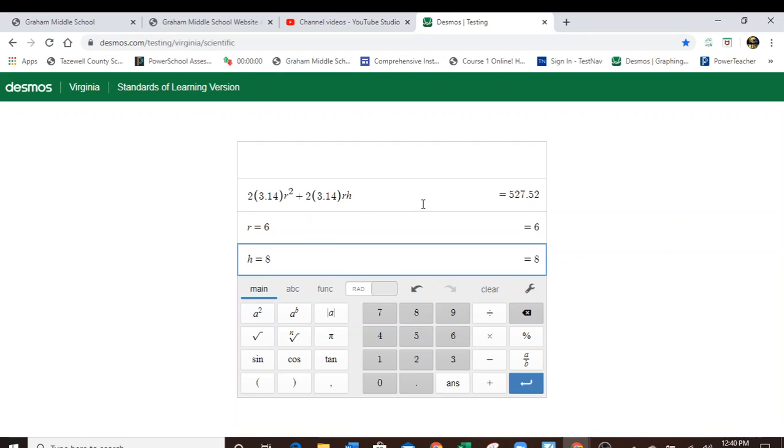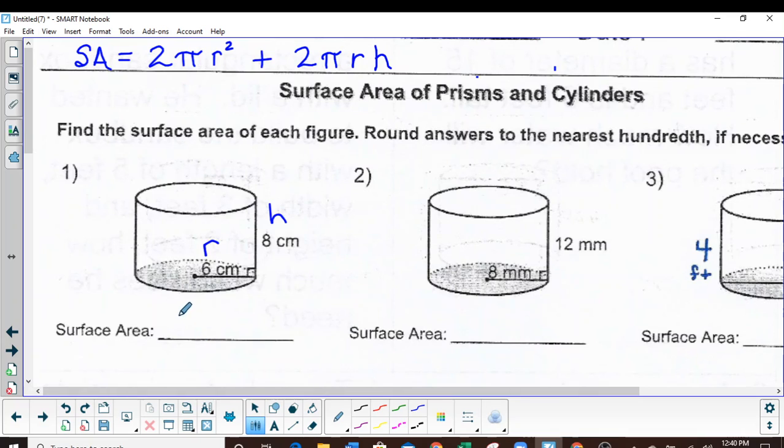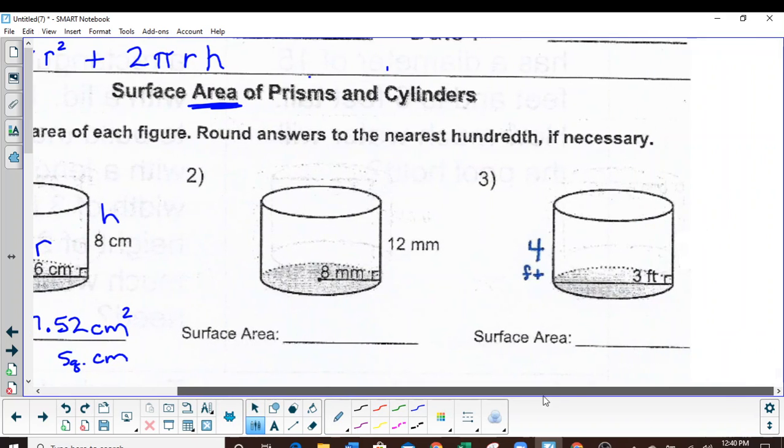So bounce back to Desmos. Let's put it in, r equals six and h equals eight. 527.52. And that is centimeters, and since this is surface area it is squared, or remember you could write it as square centimeters.